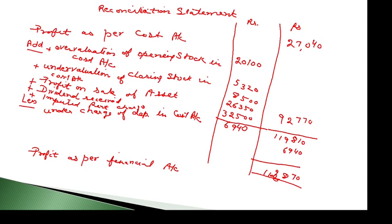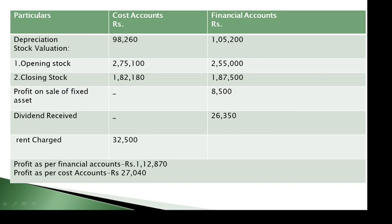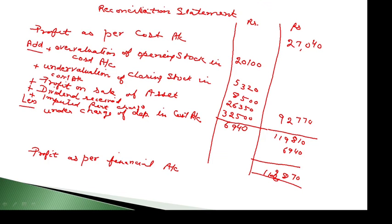Our final answer is profit as per financial accounts — 1,12,870. So students, the answer is 1,12,870. This means both profits are tallying. All the differences we identified have been checked through the reconciliation statement, confirming that both profit figures are correct. That's all for today. We'll meet in my next video. If you liked my teaching, please like, share and subscribe. Thank you.